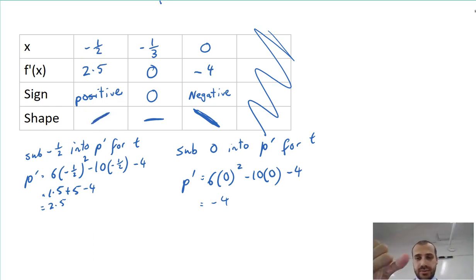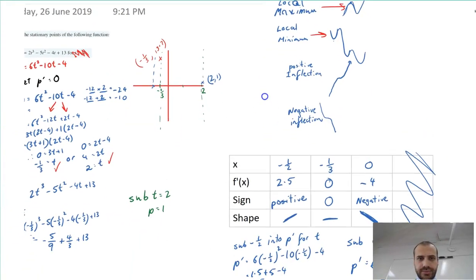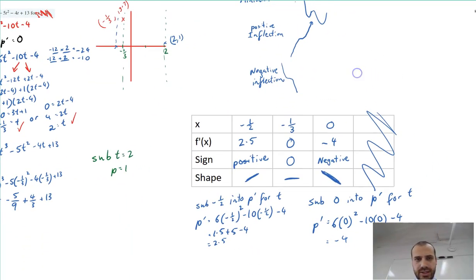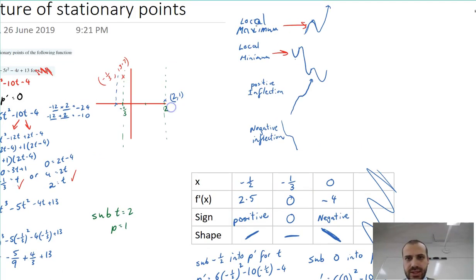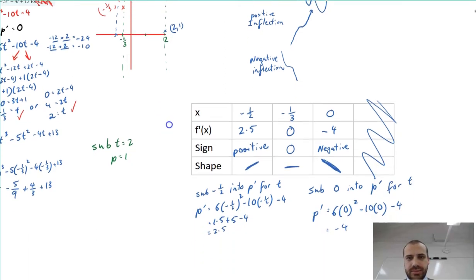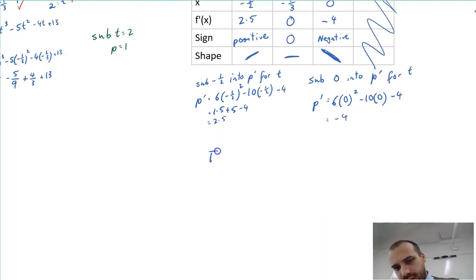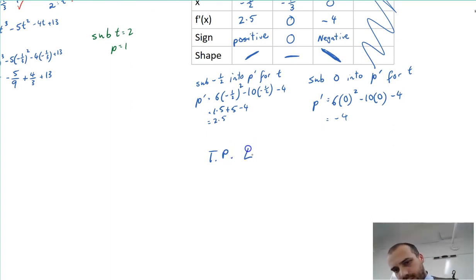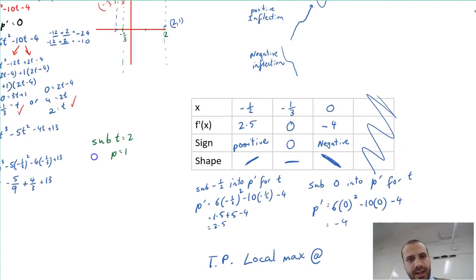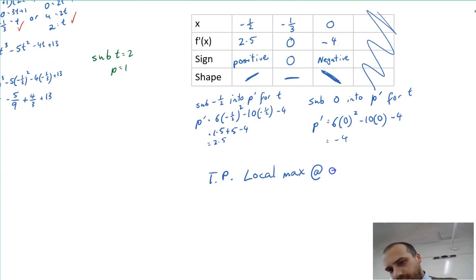Why have we done all of that? Because now I can go back and I can say not only do I know where my turning point is, but I know that it's a mountain. You start by climbing up the mountain, flat, back down the mountain. It's a local maximum. Turning point local max at negative 1 third, 13.7.